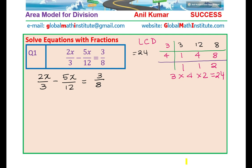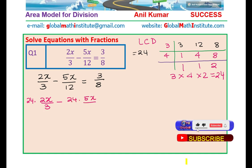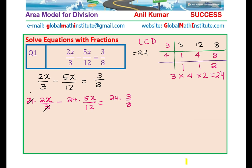Since the lowest common denominator is 24, we will multiply each term with 24. So we get: 24 times 2x over 3, minus 24 times 5x over 12, equals 24 times 3 over 8. Now 3 goes 8 times into 24, 12 goes twice, and 8 goes 3 times. So we multiply 8 with 2x giving 16x, minus 2 times 5 giving 10x, equals 3 times 3 as 9.